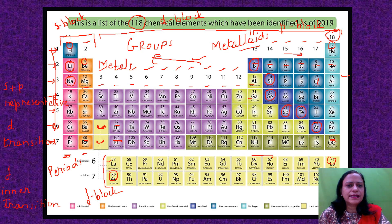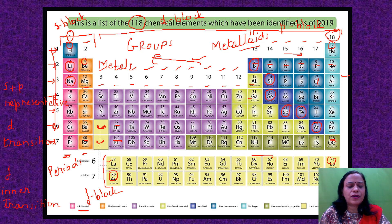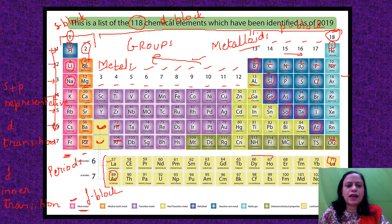Group 1, shown in pink, is also known as alkali metals — lithium, sodium, potassium, rubidium, cesium, and francium. The second group — beryllium, magnesium, calcium, strontium, barium, radium — are the alkaline earth metals, because they are found abundantly in the earth's crust and are alkaline in nature.